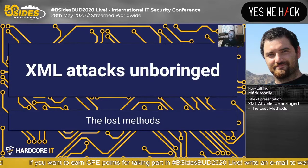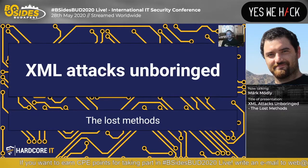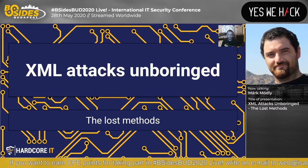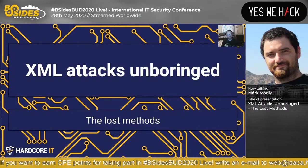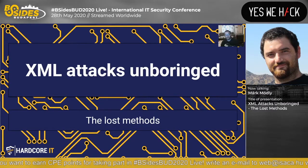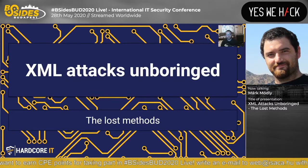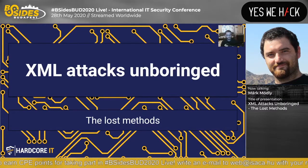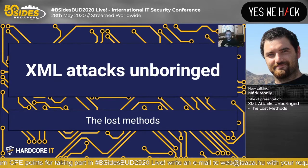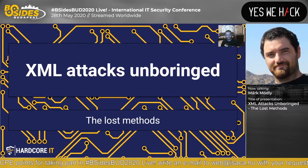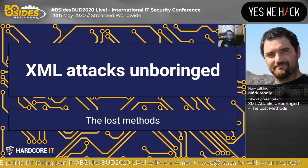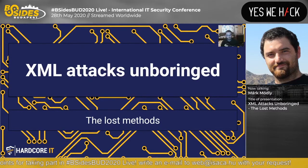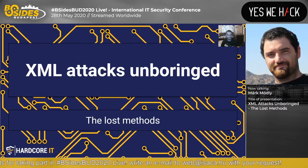Hi everyone. My topic today is XML attacks unboringed and the lost methods. In the most recent years, a lot of XML-related problems came to daylight. I think this is partly because the most recent OWASP Top 10 contains XXE, and a lot of applications are tested against only this list, sadly. To include this vulnerability is quite great, but there is room for improvement in the way we do it. In the following few minutes I try to share some information to achieve this goal, meaning the improvement.